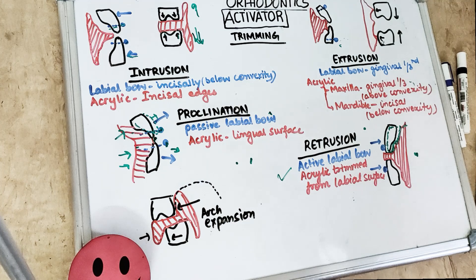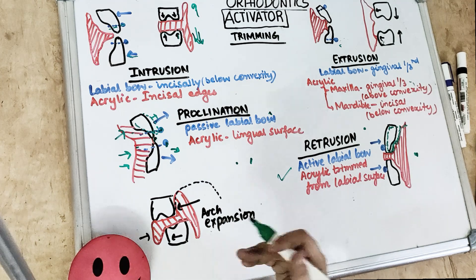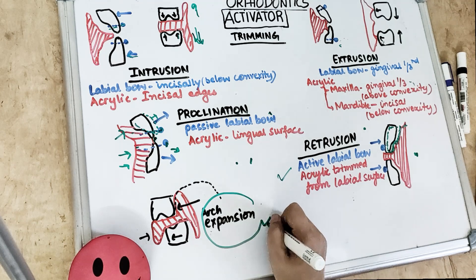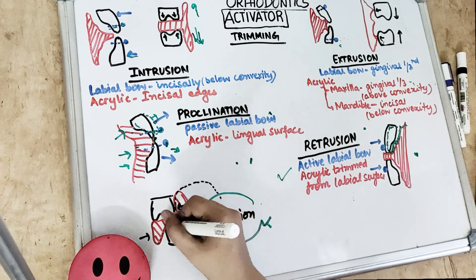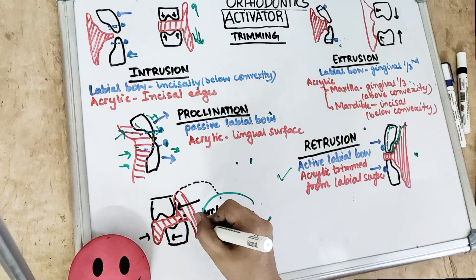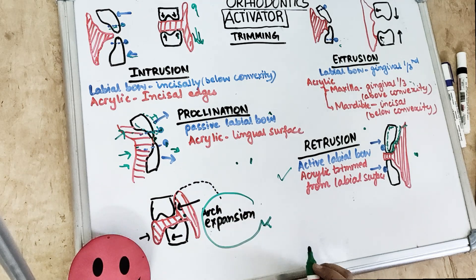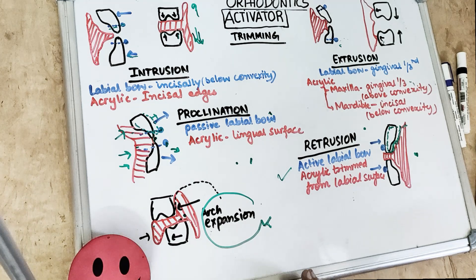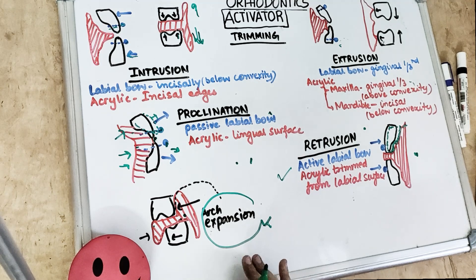It is also possible to trim the activator to stimulate arch expansion. The buccal segment can be expanded by allowing the acrylic to contact the lingual surfaces of the teeth to move them transversely. Better expansion is achieved by placing a jack screw — as in Wundrath's modification, which uses a jack screw and is used for Class 3 malocclusions.